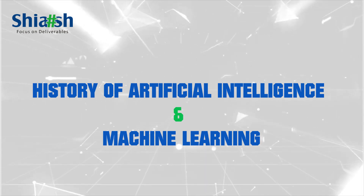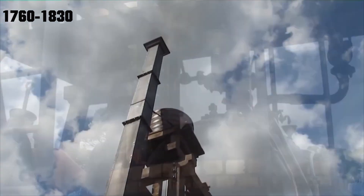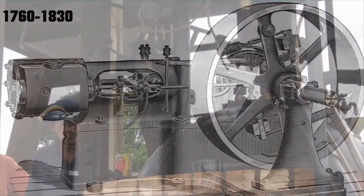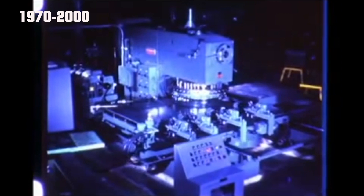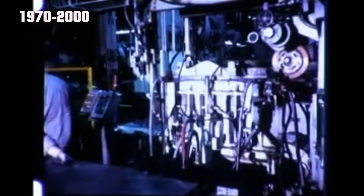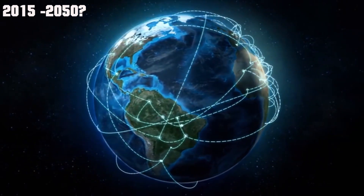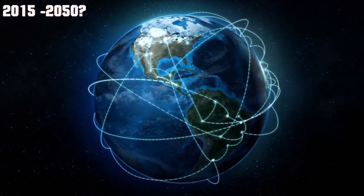Let's look at the history of artificial intelligence and machine learning in industry. The breakdown of industrial development shows great changes: from 1716 to 1830, mechanization, steam and water power; 1817 to 1940, mass production and electricity; 1917 to 2000, electronic and IT systems and automation; and from 2015 to 2050, artificial intelligence has been introduced.